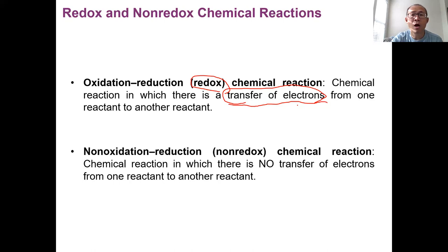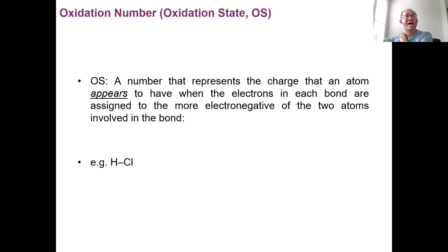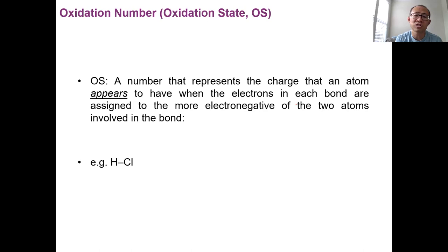Sometimes when you look at a chemical equation, it's difficult to tell whether there is a process involving transfer of electrons or not. So chemists created a simple number — a concept — to help study redox reactions in a better way. That number is called the oxidation number or oxidation state.